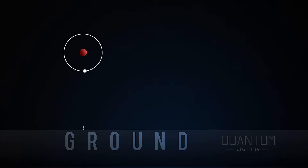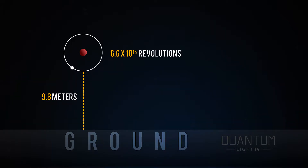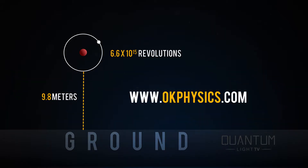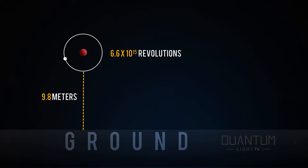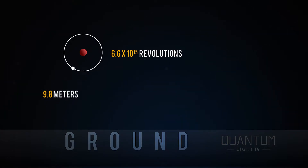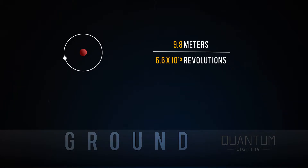Gravity is 9.8 meters per second per second. I want to thank the kind folks over at okphysics.com for figuring out the electron frequency, which is found to be 6.6 times 10 to the 15th hertz, or revolutions per second. With these two pieces of information, I can find the distance that the electron will have to deviate with each rotation in order to reach 9.8 meters in one second.